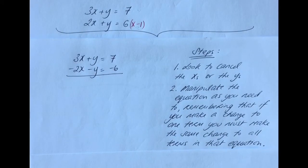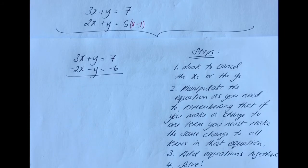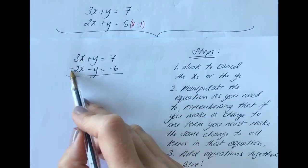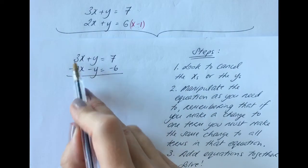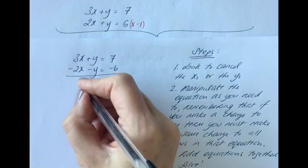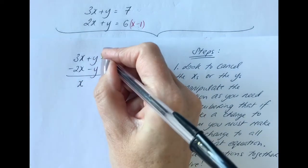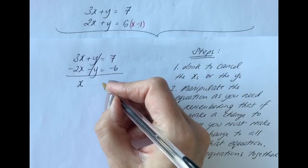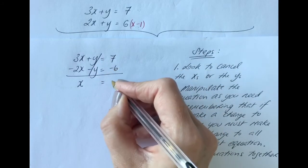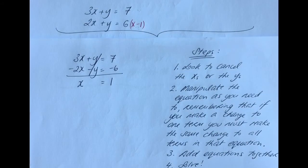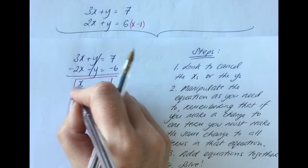Step three is to add the equations together, and step four is to solve. Adding them: 3x minus 2x is just 1x; y take away y is nothing — which is what we want; equals 7 take away 6, which is 1. So x is equal to 1 — that's the first answer.